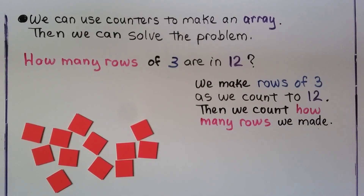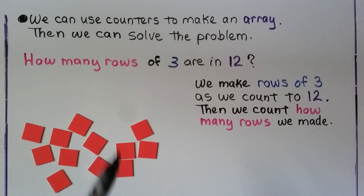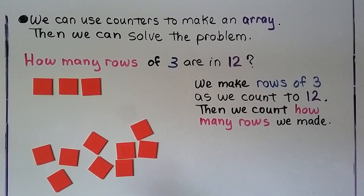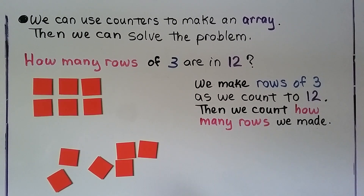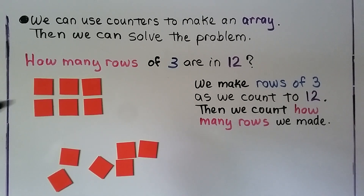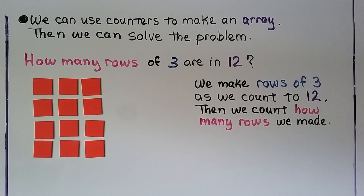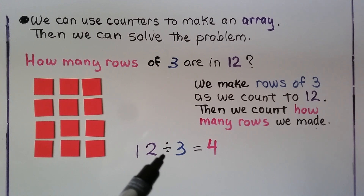We can use counters to make an array and solve: how many rows of 3 are in 12? First we count out 12 counters, then make rows of 3 — so we'll have 3 in each row — and count to 12. Then we count the rows: 1 row of 3, 2 rows of 3, 3 rows of 3, 4 rows of 3. 12 in all divided by 3 in each row is equal to 4 rows.